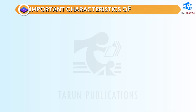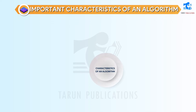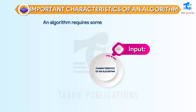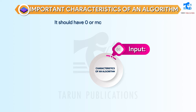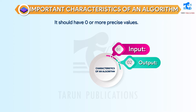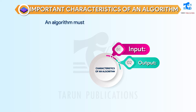Important Characteristics of an Algorithm. Input: an algorithm requires some input values to produce an output. It should have zero or more precise values. Output: an algorithm must result in one or more outputs.